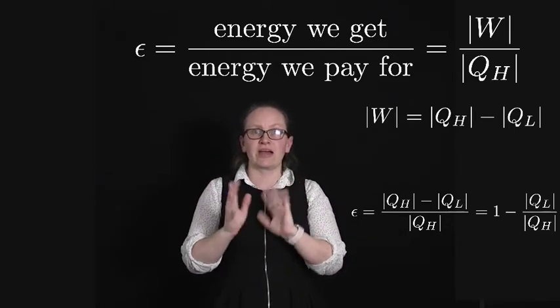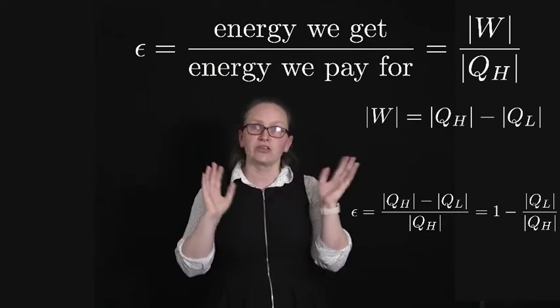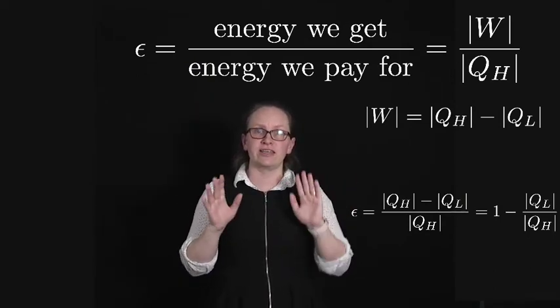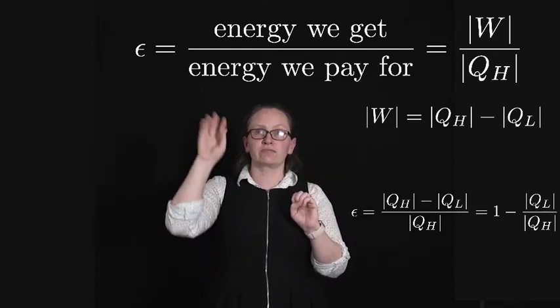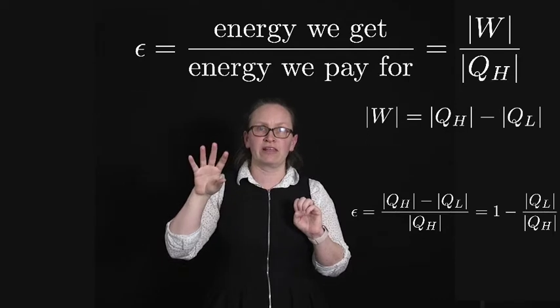So then just doing some algebra, dividing by QH, we know QH divided by QH is 1. So we can simplify this down to the efficiency is equal to 1, minus the absolute value of QL, divided by the absolute value of QH.